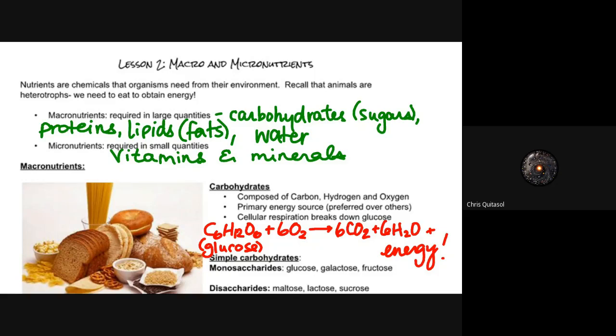Macro means we need large quantities, so macro is a Latin term for large amounts, whereas micro is a term for smaller quantities. So the macronutrients that we need in large quantities are those carbohydrates like sugars, proteins, lipids which are fats, as well as water. The micronutrients that we require in smaller dosages or quantities are the things like vitamins and minerals.